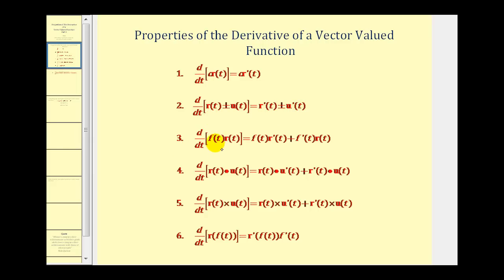The third property states that if we have a function in terms of t times a vector valued function, the derivative is going to equal the function in terms of t times the derivative of the vector valued function, plus the derivative of the function times the vector valued function r of t. This should remind you of the product rule, but keep in mind that f of t is a scalar function and r of t is a vector valued function.